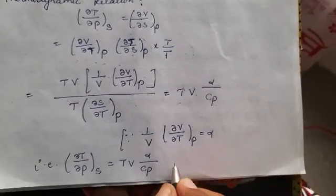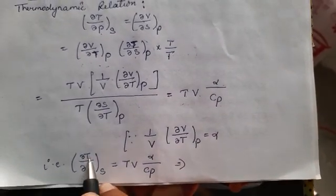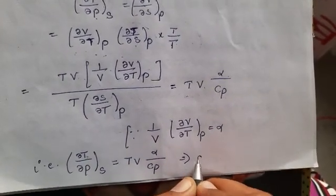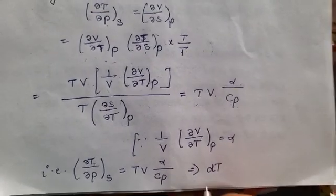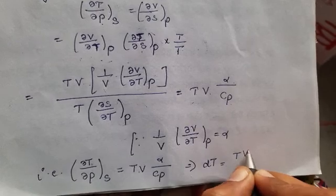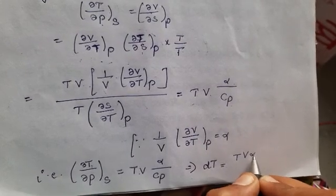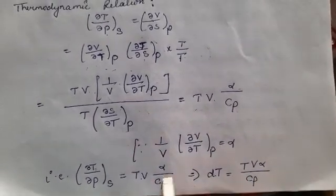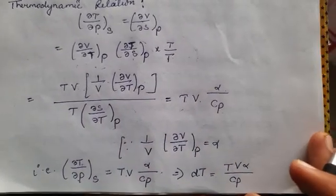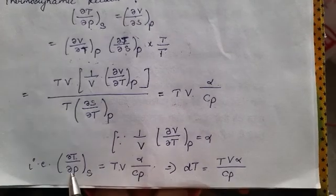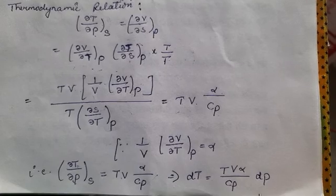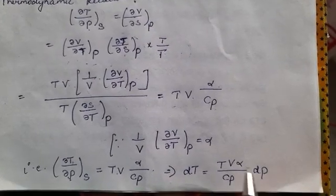Now writing this equation in the form of differentiation, it becomes: dT equals (T·V·alpha / Cp) dP, where T, V, and alpha are assumed to not change significantly. This is the required differential relation.